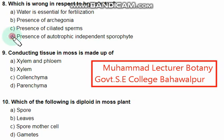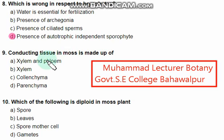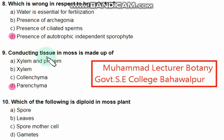Conducting tissues in mosses are made up of which material? Options include xylem and phloem, collenchyma, and parenchyma. The conducting tissue in moss is made up of parenchyma — that is the right option.